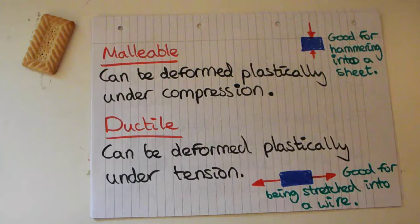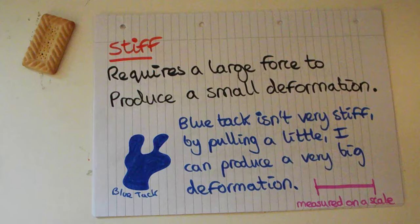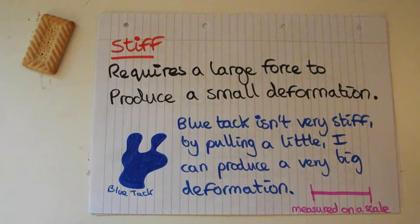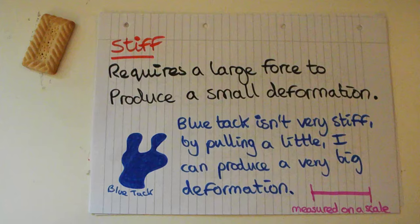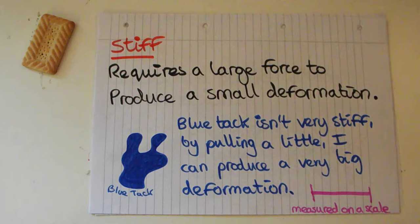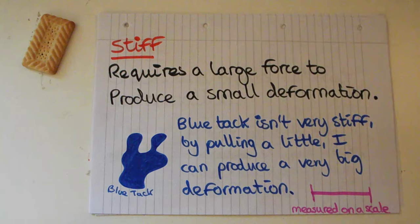If something is stiff then you're going to have a tough time deforming it at all — it requires quite a large force to produce just a small deformation. For example, blue tack is not very stiff; with a little bit of force I could produce quite a big deformation. How stiff something is is measured on a scale called Young's modulus. A high Young's modulus means something is very stiff, needing a lot of force to produce a small deformation. I'll leave links in the description to other videos on Young's modulus.